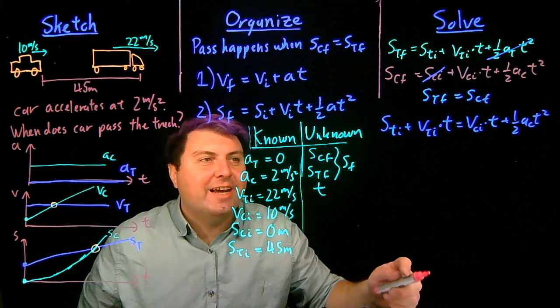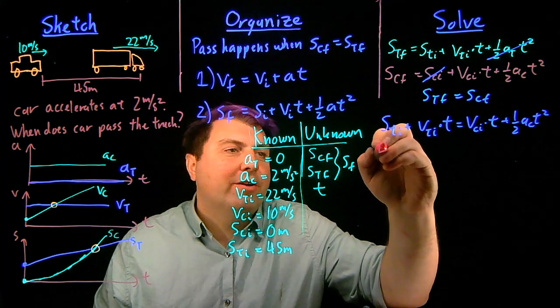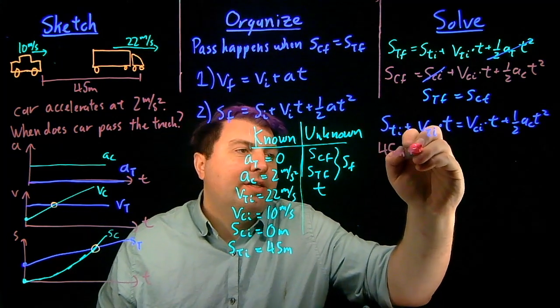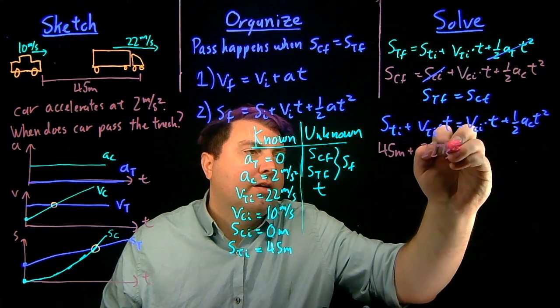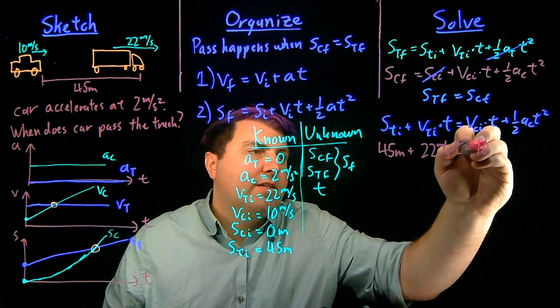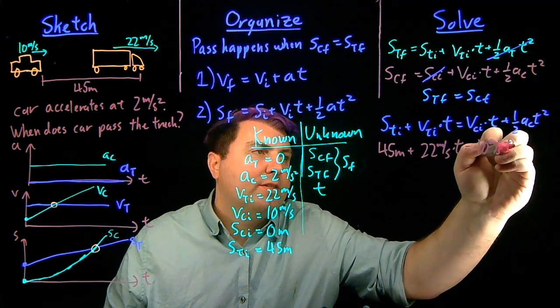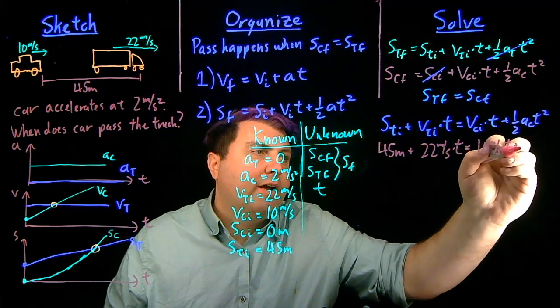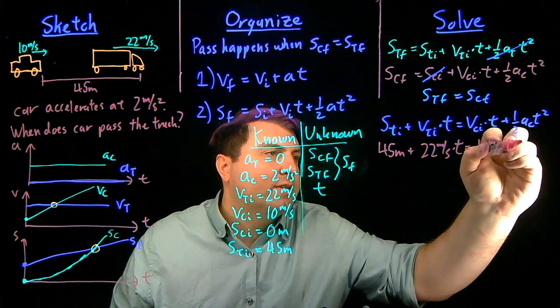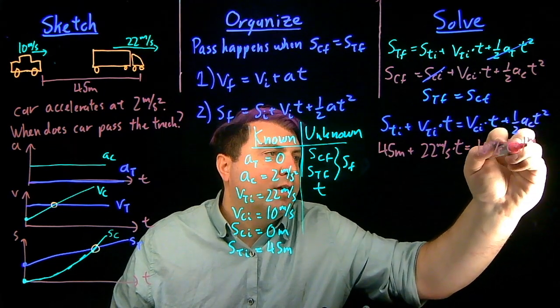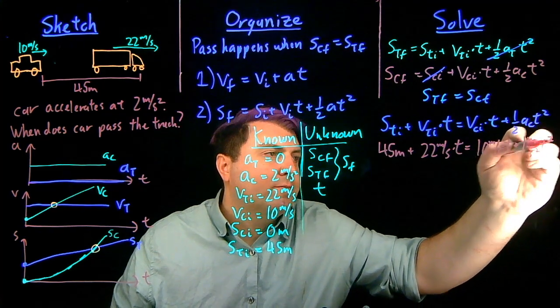This is a little bit intimidating until I remember I have all this. I've written all this down. STI is 45 meters. VTI is 22 meters per second. Time is time. VCI is 10 meters per second. Time is time. And then I have one-half times 2. I'm running out a little bit of space. So one-half times 2 is just 1 meters per second squared times T squared.